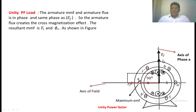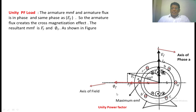Now we are going to find the phasor sum of FA and FF, which gives the resultant MMF in a synchronous machine. In terms of flux: because of FF, the main flux is created; because of FA, the armature flux is created — represented by the black arrow, which is in phase with FA. Finding the phasor sum of these two gives the resultant flux. So when you connect a resistive load across the generator, it simply creates a cross-magnetization effect, as we can see in the phasor diagram of the synchronous generator.